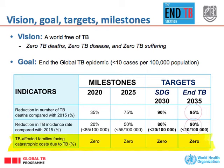Starting in 2020, with milestones every five years, we do not want to have catastrophic costs imposed upon people and families facing tuberculosis. That means availability of universal health coverage and social protection mechanisms.